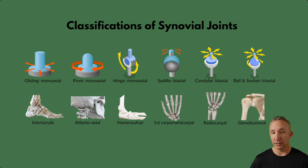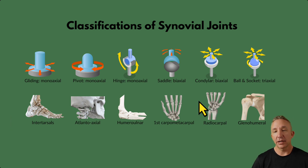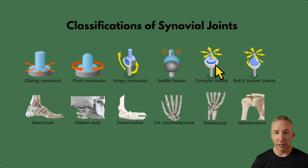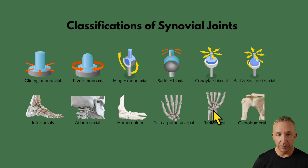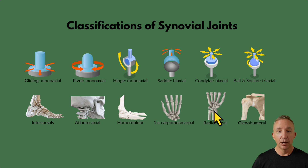A condylar joint — also called an ellipsoid joint, like an elliptical machine — is another biaxial joint moving on two planes. It involves a shallow depression where one bone articulates with a rounded structure. In the hand, we look at the carpal bones: the scaphoid, lunate, and triquetrum — remembered as 'so long, too, pinky, here comes the thumb' — where they articulate at the distal end of the radius.